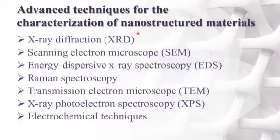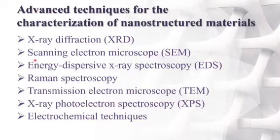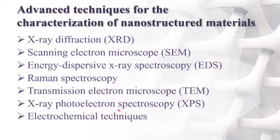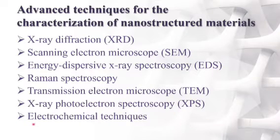We will discuss advanced techniques for characterization of nanostructured materials. These methods are used because we have to first synthesize the metal oxides. The main characterization methods are X-ray diffraction (XRD), scanning electron microscope (SEM), energy dispersive X-ray spectroscopy (EDS), Raman spectroscopy, transmission electron microscope (TEM), X-ray photoelectron spectroscopy (XPS), and electrochemical techniques.